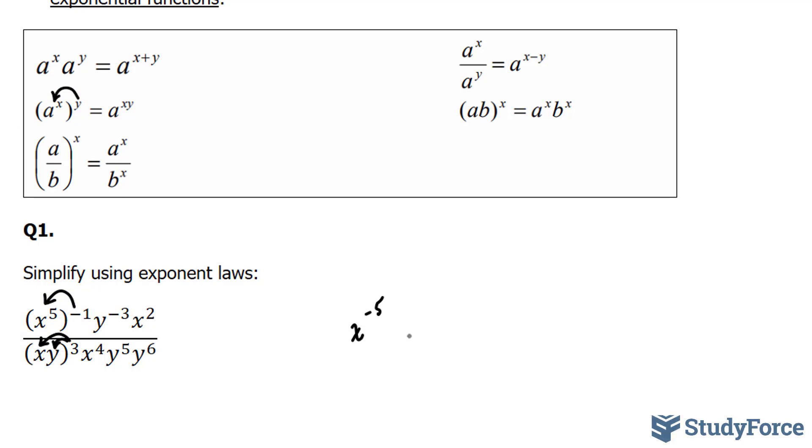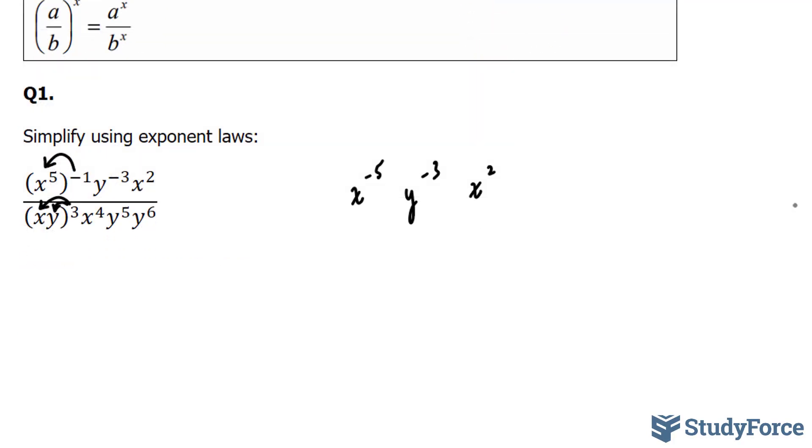And everything else stays the way it is. Similarly, at the bottom, we have x to the power of 3 and y to the power of 3, because that 3 gets distributed to each individual element, and everything else remains the way it is.